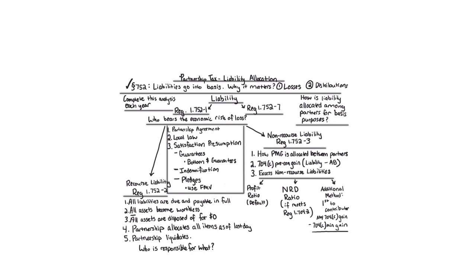The essential part of this question is the $900 of liability. Under Section 752, partnership liability allocation, liabilities go into basis. We determine what kind of liability under Reg 1.752-1 — it's a regular liability, not contingent. So we ask who bears the economic risk of loss, looking at the partnership agreement, local law, satisfaction presumption, and then we break it down into recourse and non-recourse. We're told it's recourse, so we're going to apply the five-step hypothetical liquidation where everything is worth zero.